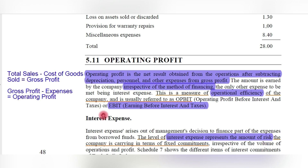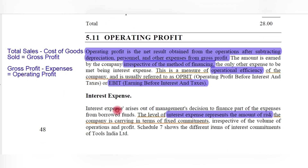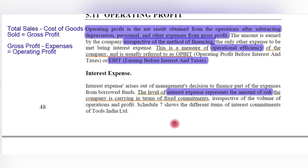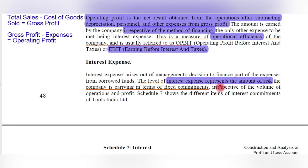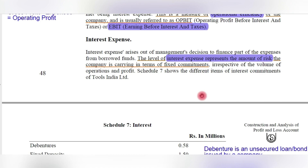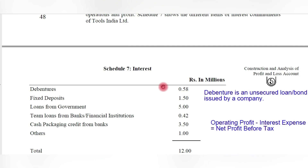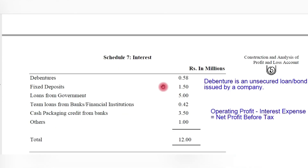Interest expense: if the company brings in debt capital, it has to service the debt by paying regular interest installments. Interest expense arises out of management's decision to finance part of expenses from borrowed or debt funds. The level of interest expense represents the amount of risk the company carries in terms of fixed commitments. In this example, the interest breakup is: debentures 0.58 rupees, fixed deposits 1.5 rupees, loans from government 5 rupees, term loans from banks or financial institutions 0.42 rupees, cash/packaging credit from banks and others 4.5 rupees — totaling 12 rupees.